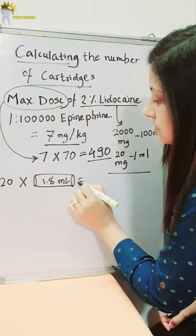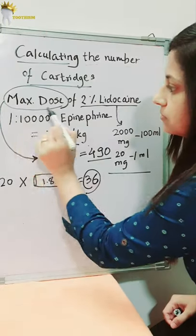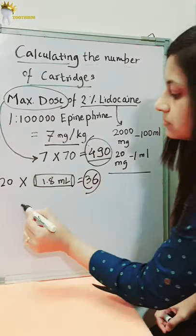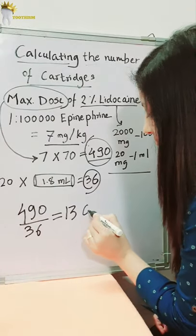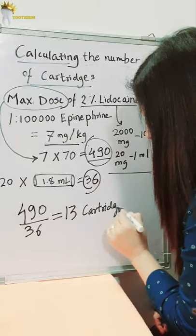So in a dental cartridge there is 36 mg of lidocaine, and the maximum dose that we can give is 490 mg. So divide 490 by 36, we will require 13 cartridges.